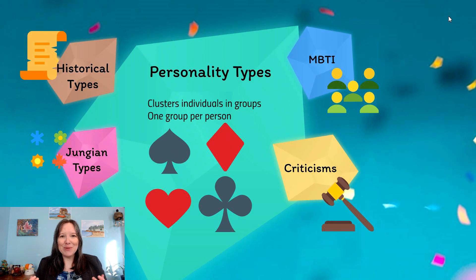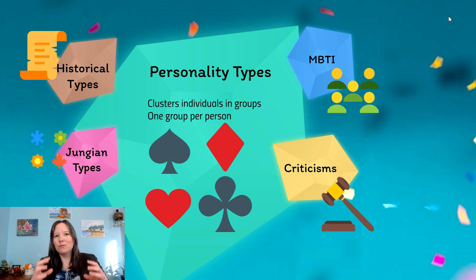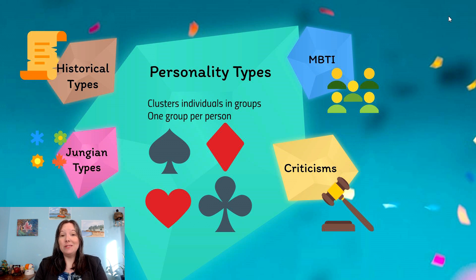Personality types is something that has really clung to humans for millennia — for 5,000 years we've been talking about personality types. This is the idea that we might cluster individuals into groups, with only one group per person. So you were either a spade, a heart, a diamond, or a club, if you will. And although I'm using card suits, you'll see that these cards are actually tied to something historically that was used to describe personality.